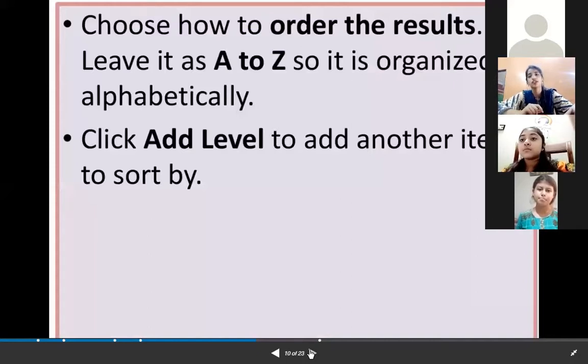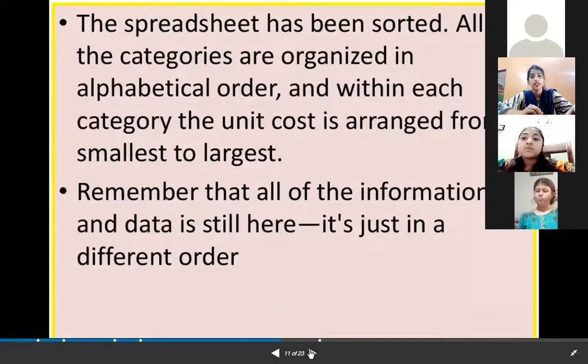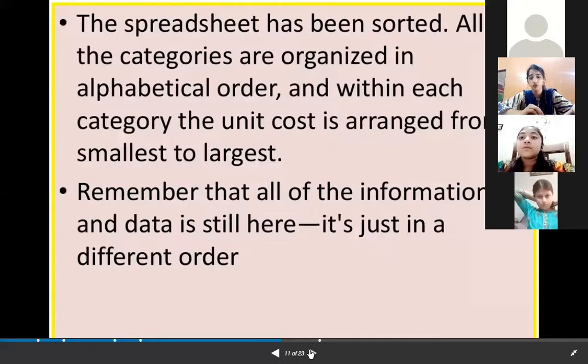Choose how to order the results. Leave it as A to Z so it is organized alphabetically. Click Add Level to add another item to sort by. The spreadsheet has been sorted. All of the categories are organized in alphabetical order, and within each category the unit price is arranged from smallest to largest.